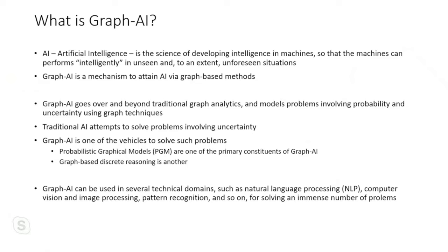What is graph AI? AI is about making machines more intelligent so they can respond intelligently in unforeseen situations. Graph AI is a graph-based mechanism to attain that goal. It goes over and beyond graph analytics — it models problems involving probability and uncertainty using graph techniques. One of the main areas of graph AI is probabilistic graphical models, a very broad and deep area.